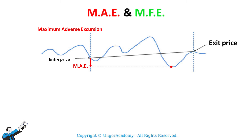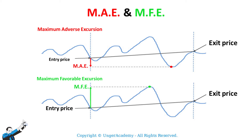Let's first try understanding what MAE and MFE are. Starting with MAE — the Maximum Adverse Excursion. If we take one of our trades with its entry and exit price and look at the lowest value recorded by the market, the MAE quantifies the maximum drawdown of our trade numerically.